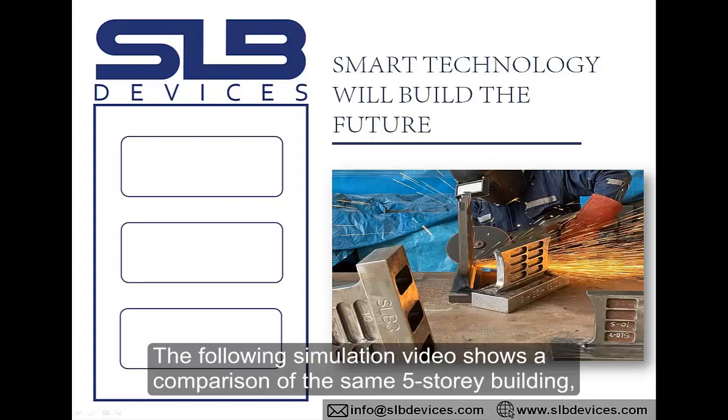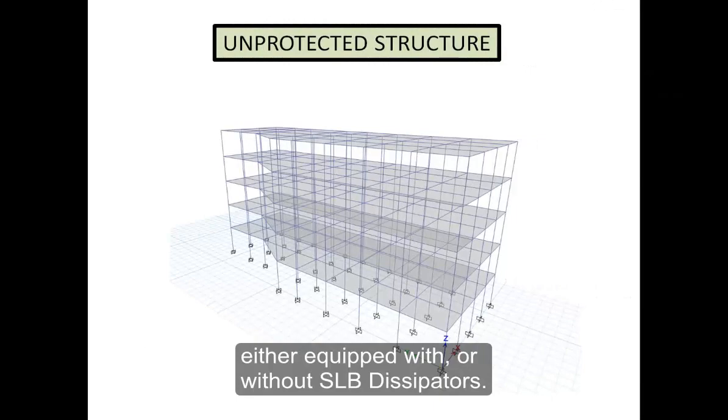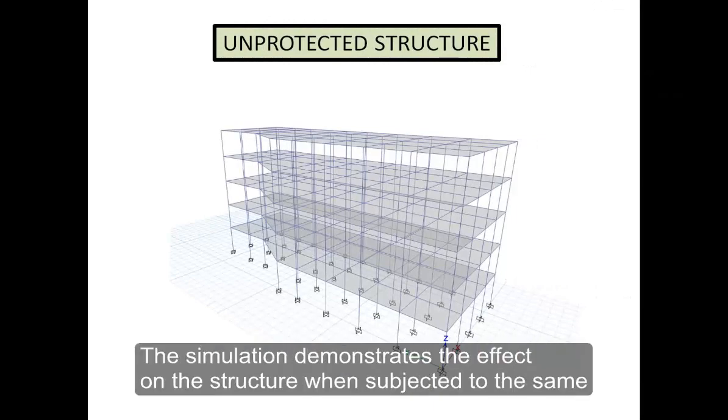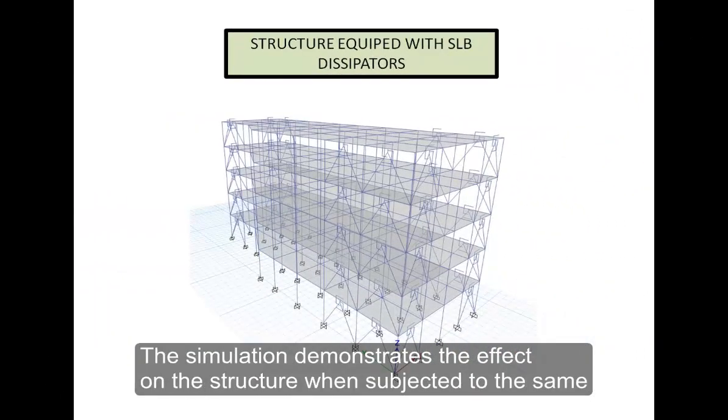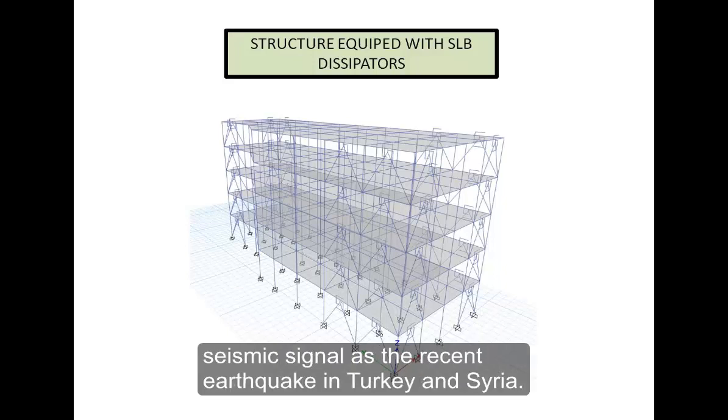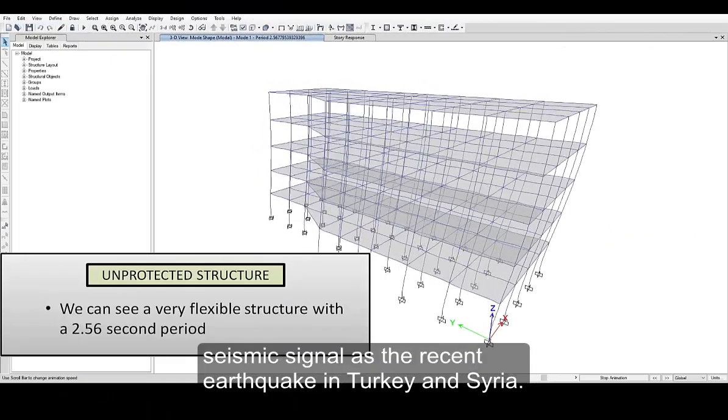The following simulation video shows a comparison of the same five-story building that are equipped with or without SLB dissipators. The simulation demonstrates the effect on the structure when subjected to the same seismic signal as the recent earthquake in Turkey and Syria.